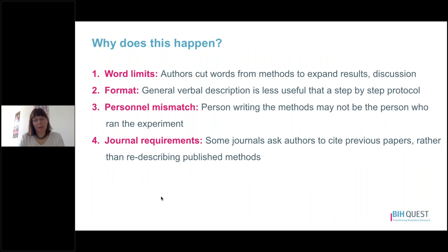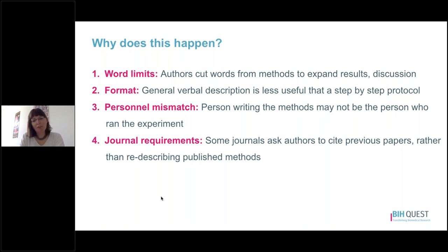Why does this happen? There are a number of reasons. One is word limits — because there are word limits on entire papers, including the method section, authors will often cut words from the methods to leave more space in the results and discussion. The second issue is format: protocols are most useful when presented as step-by-step descriptions, whereas the general paragraph descriptions in a method section are typically not very useful. Another issue is a personnel mismatch — the person writing the methods may not be the person who ran the experiment, leading to essential details being omitted or incorrectly stated. And lastly, some journals require authors to cite previous papers describing the method instead of re-describing published methods, which can also be a problem for reproducibility.